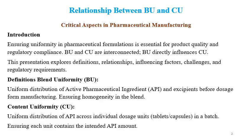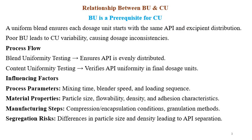Sometimes there is good Blend Uniformity but CU may fail. So we have to understand the interrelationships. BU is a prerequisite for CU — a uniform blend ensures each dose unit starts with the same API and excipient distribution. Poor BU leads to CU variability, causing dose inconsistencies. Regarding the process flow for BU and CU: Blend Uniformity testing ensures API is evenly distributed throughout the blend, while Content Uniformity testing verifies API uniformity in the final formulation or final dose units.